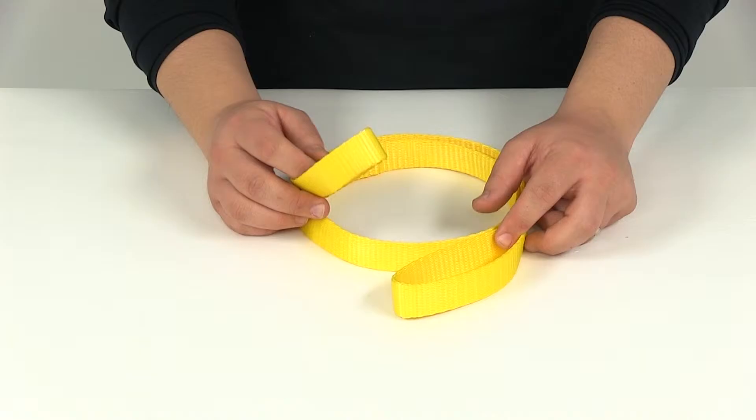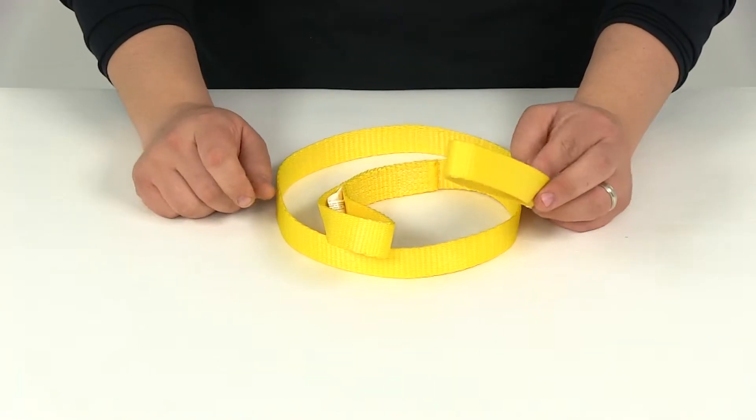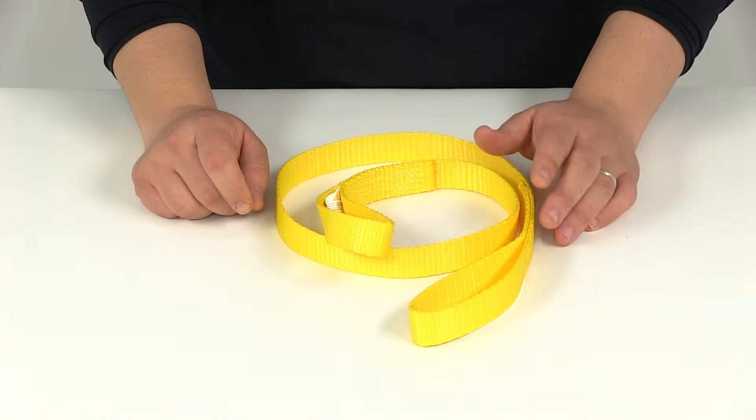You're going to have the vertical attachment, which is just how the strap comes. Put it around your application, lift it with the other side. That's going to give you a capacity of about 1,200 pounds.